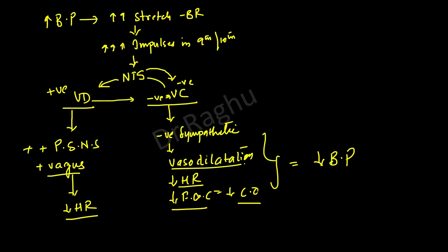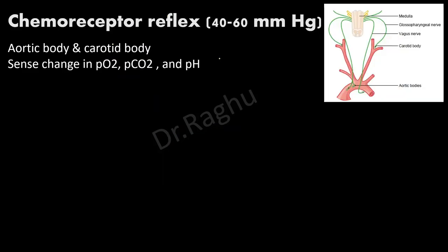The chemoreceptor reflex operates best between 40 to 60 mmHg of mean arterial pressure. It is mediated by peripheral chemoreceptors — the aortic body (along the arch of aorta) and the carotid body (at the bifurcation of the common carotid artery). The carotid body sends signals via the glossopharyngeal nerve; the aortic body via the vagus nerve. These chemoreceptors sense changes in partial pressure of oxygen, carbon dioxide, and pH — specifically, a fall in pO2, rise in pCO2, and acidosis.